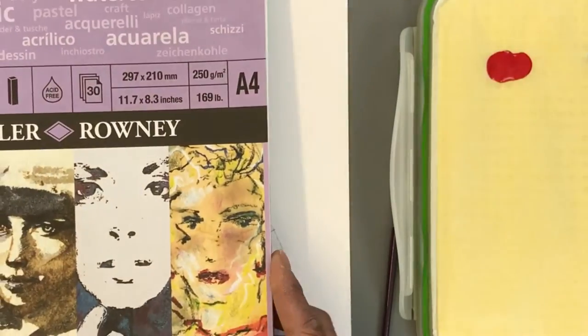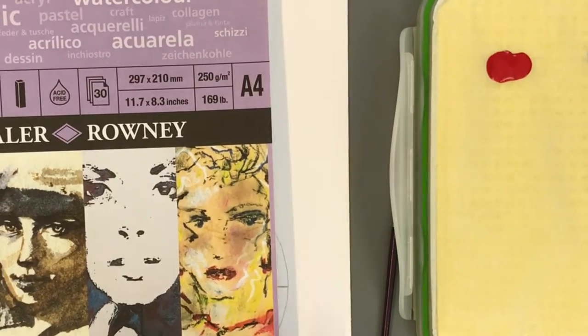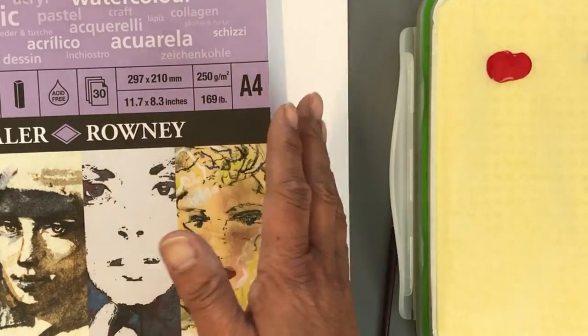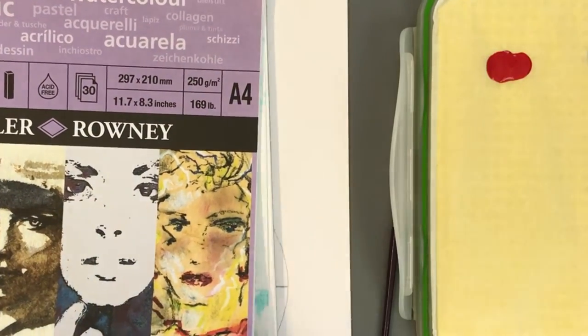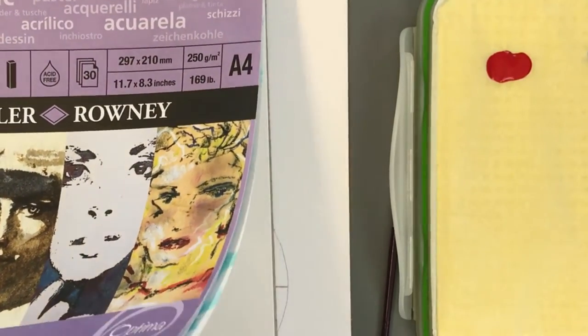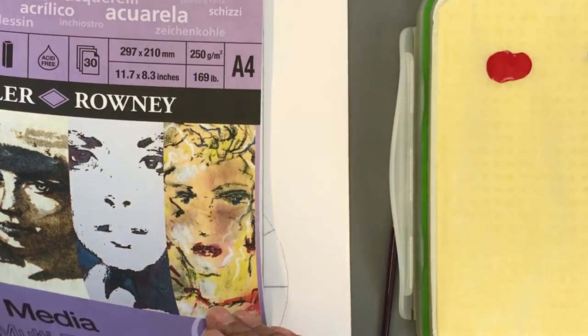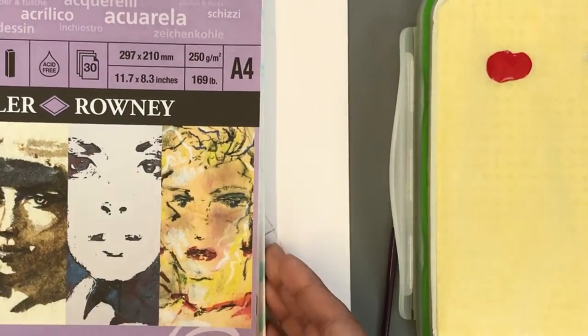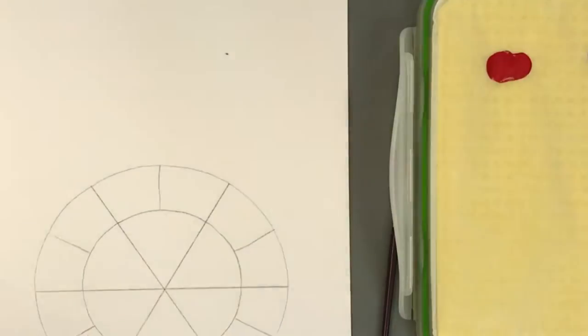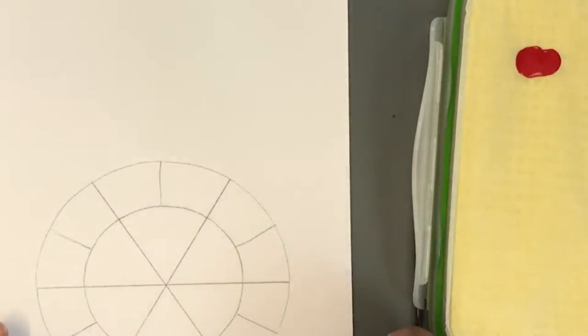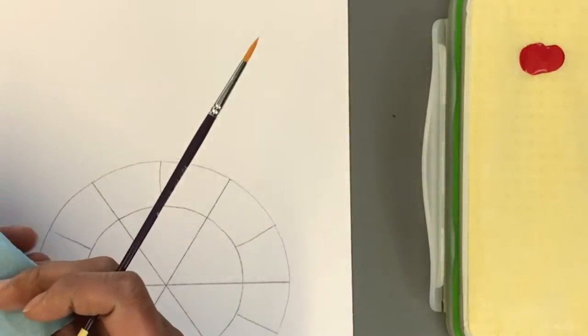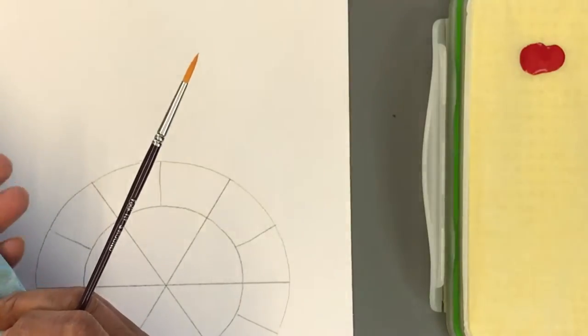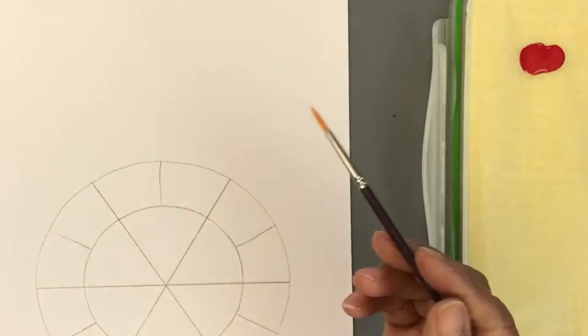One pad that I use quite often is this mixed media paper because it will take acrylic, watercolor, charcoals, it will take everything so your paints aren't going to soak through but your average copy paper is probably not going to work. So just find something suitable to be painting on. Obviously you want your water bowl and some kitchen roll or shop paper just to dry and clean your brush off with.